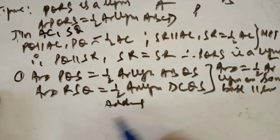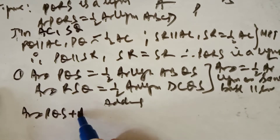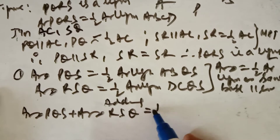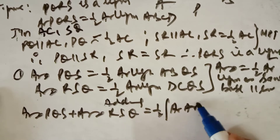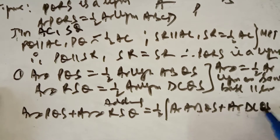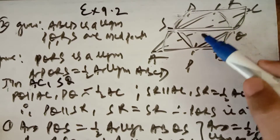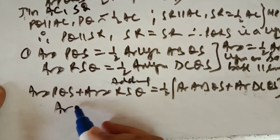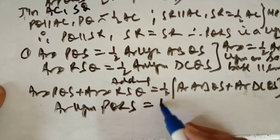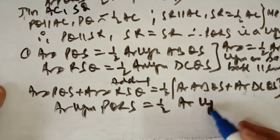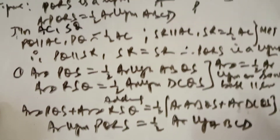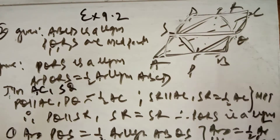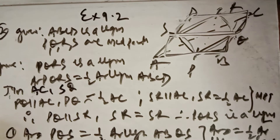Adding these two: area of triangle PQS plus area of triangle RSQ equals half times (area of ABQS plus area of DCQS). When you add ABQS and DCQS together, you get ABCD. Therefore, area of parallelogram PQRS equals half the area of parallelogram ABCD. This is question number 2 of Exercise 9.2.